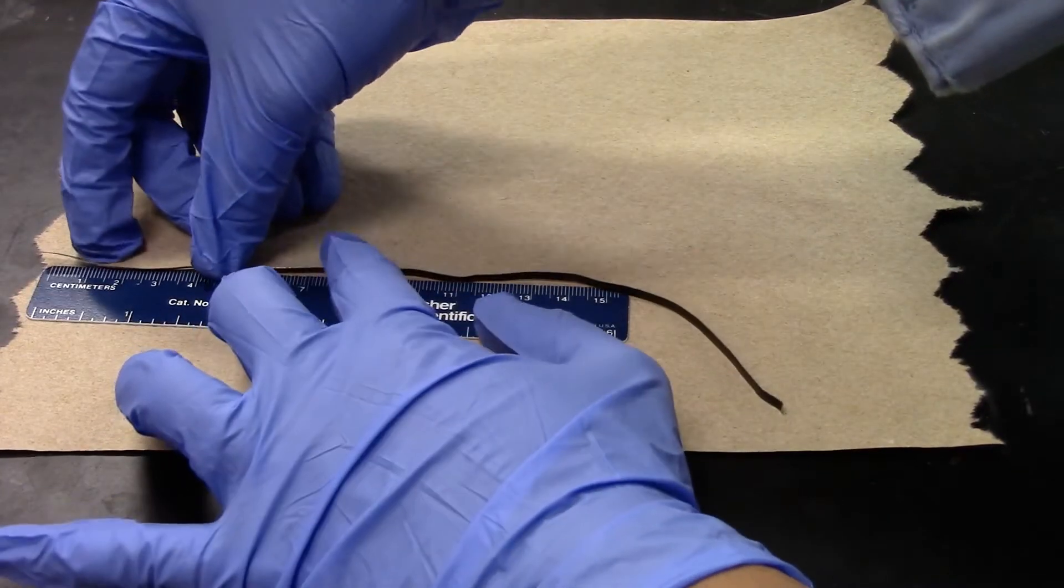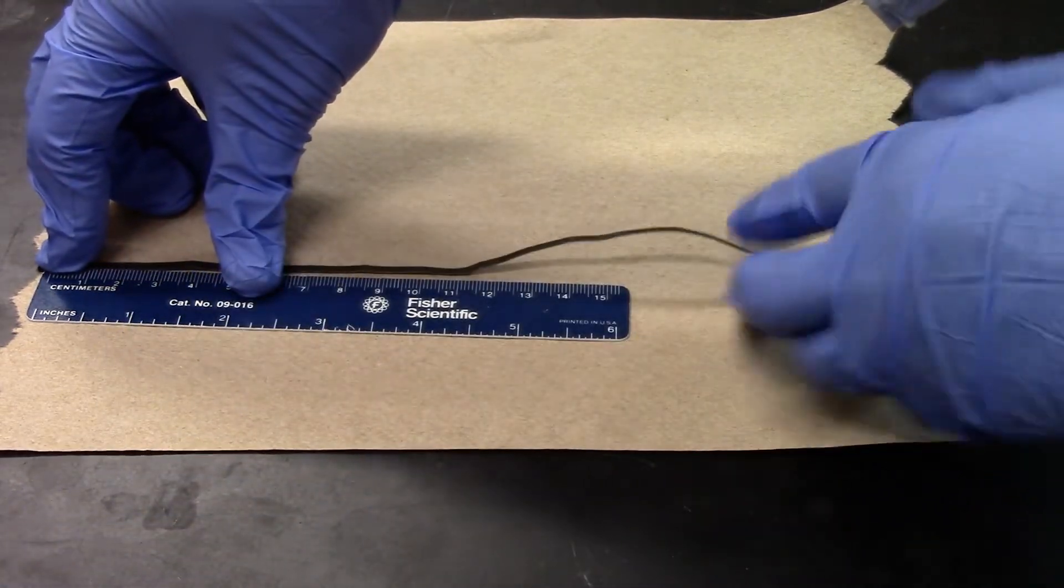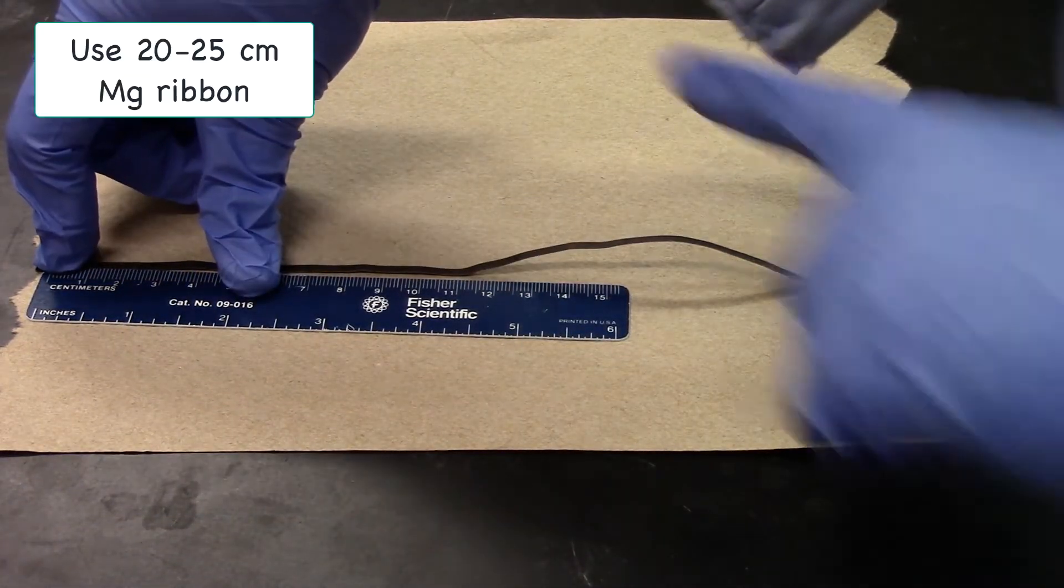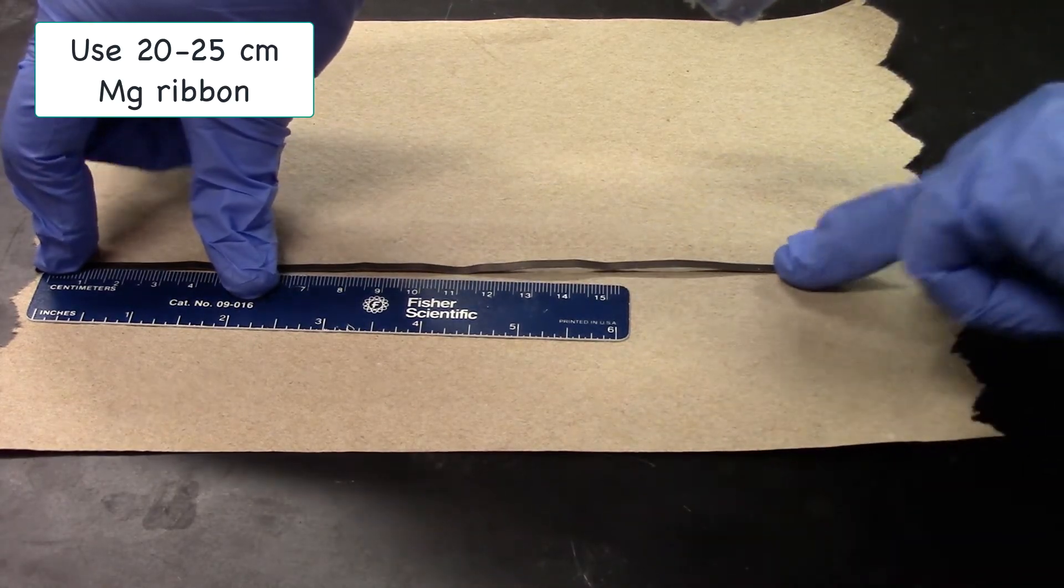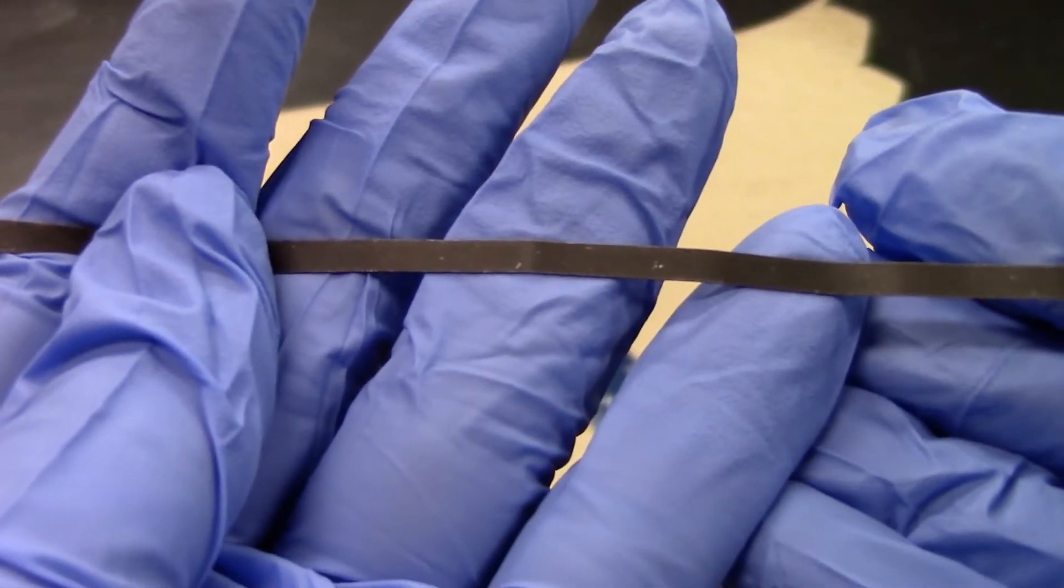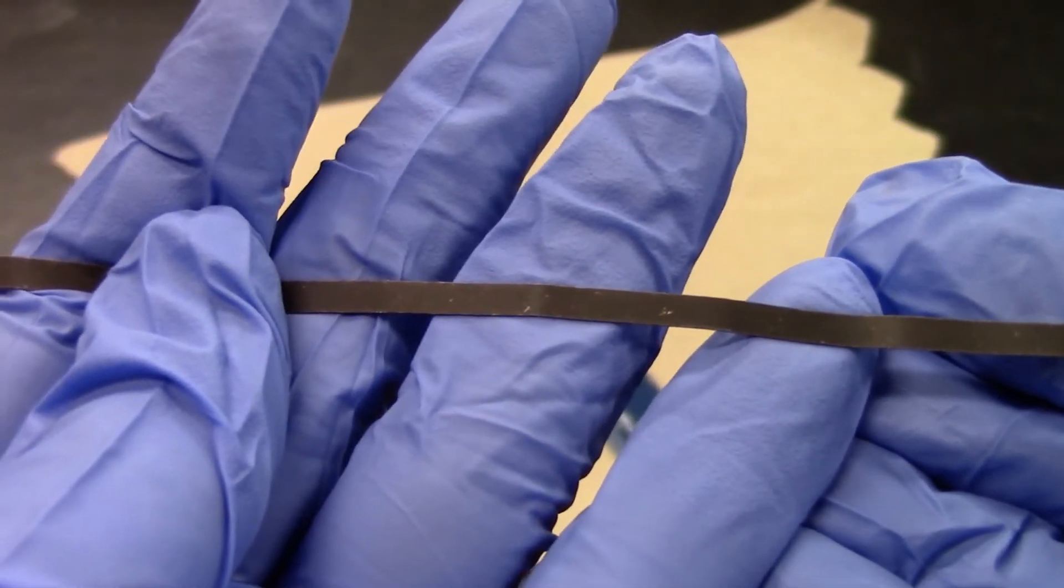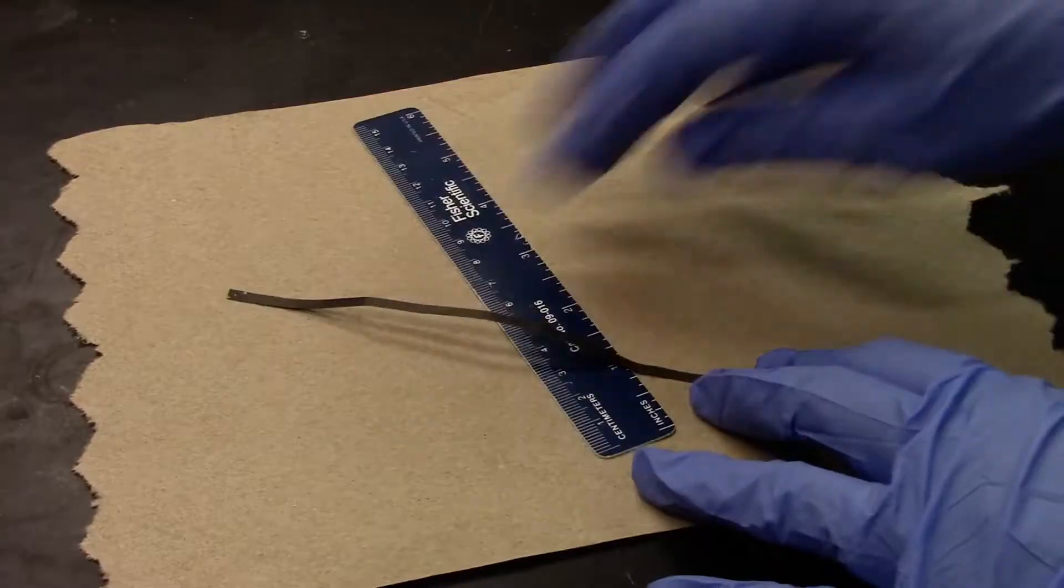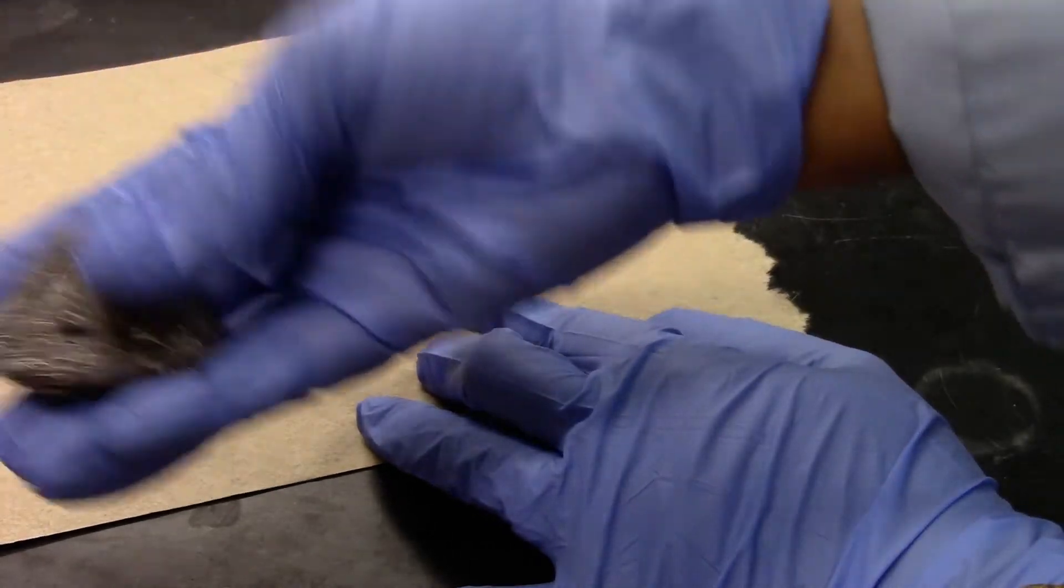The magnesium ribbon is a little longer than the ruler. This should be a good length for the reaction. If you take a close look, the magnesium has a grey coating on top which is the oxide coating. I will clean this with a steel wool.